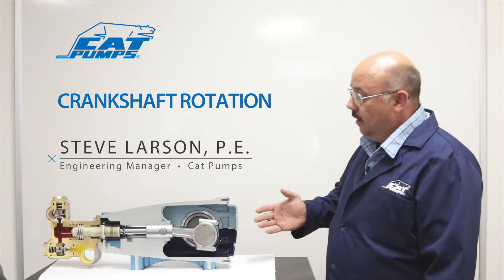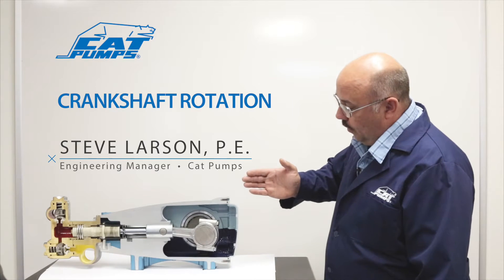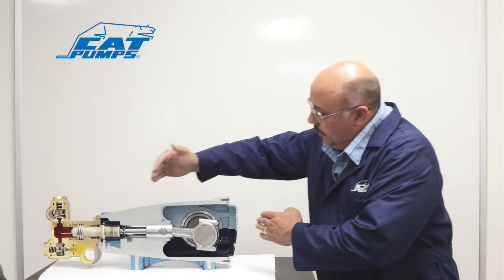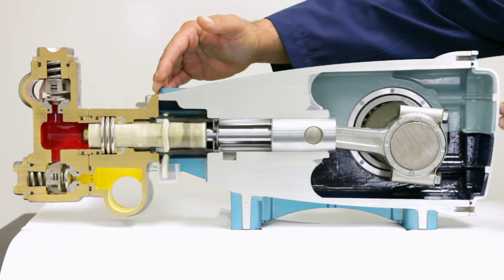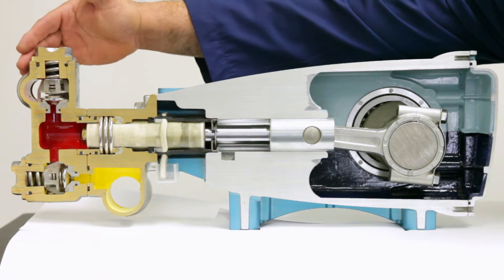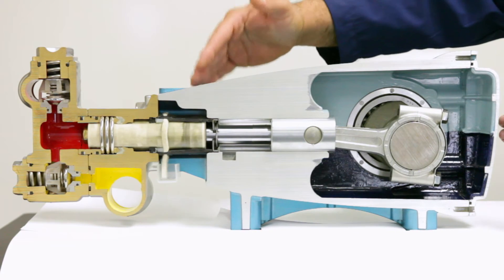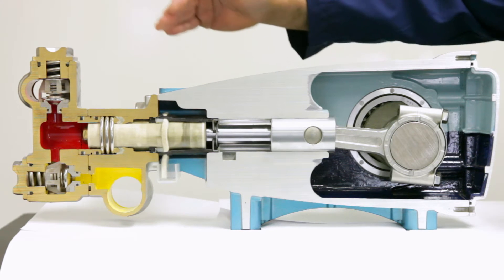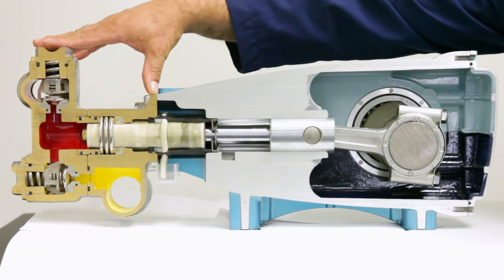What I've got modeled here is a 35-35 cross-section view, showing from here to here is the drive section, from here to here is the fluid section. This is where we put the Cat Pumps oil, and this end here is where we handle our pumped liquid.